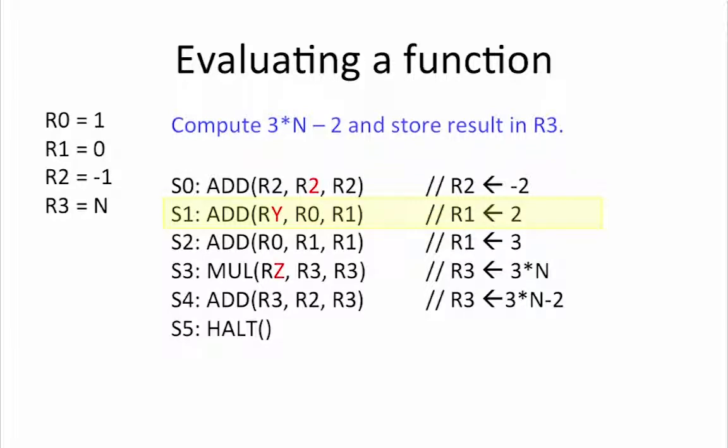Next we look at state S1. Here we want to end up with a value 2 in R1 by adding Ry to R0, which currently holds a 1. In order to produce 2, we need to add 1, which means Ry equals R0.